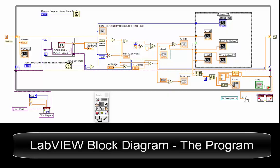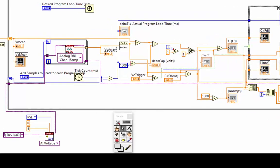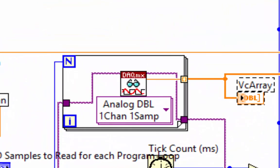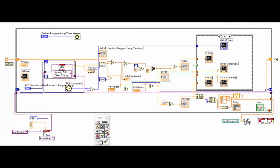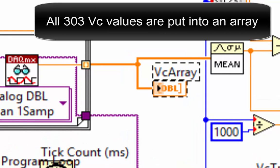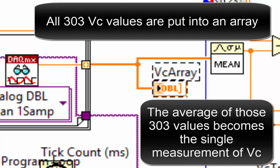Here is the LabVIEW block diagram. It is the program. Here is a for loop. It reads the 12 bit A to D 303 times each program loop. All 303 capacitor voltage values are put into an array. The average of those 303 values becomes the single measurement of VC.